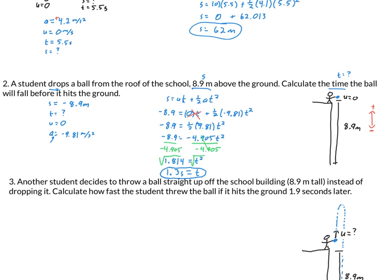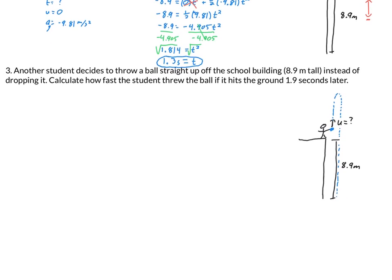One last problem: number three, where we're going to throw the ball up while it's accelerating down. Another student decides to throw the ball straight up off the school building. Here's my displacement, still going down 8.9 meters. Calculate how fast the student threw the ball if it hit the ground t seconds later. Many students worry about the s still being negative 8.9 meters. Remember, s is the displacement.